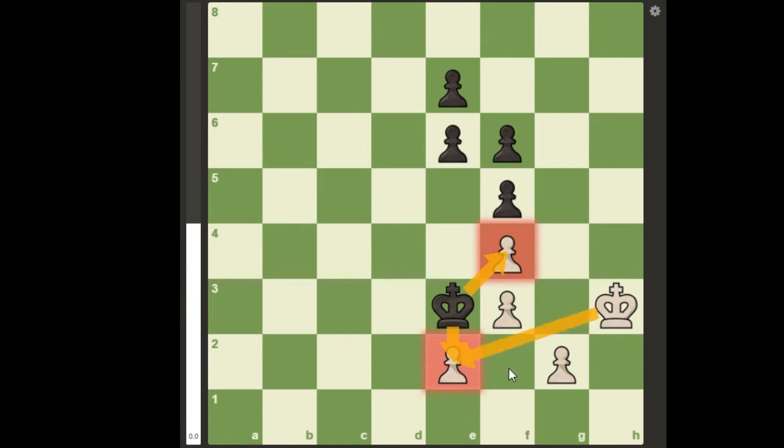It seems that white is losing, but in reality, among the 5 legal moves king h2, g3, h4, pawn to g3, and g4, there is the move for white to draw. And this move is the brilliant quiet move pawn to g3.